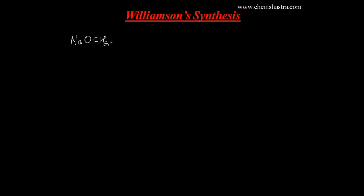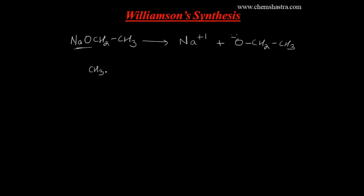Now let's understand Williamson synthesis itself. We have sodium ethoxide — NaOCH₂CH₃. The Na-O interaction is purely ionic, so it easily undergoes dissociation to give Na⁺ ion and the alkoxide ion O⁻CH₂CH₃. In the second molecule, we have methyl bromide CH₃Br. The C-Br bond dissociates in favor of bromine because halogens are very good leaving groups, so Br⁻ departs, making the carbon an electrophilic center.